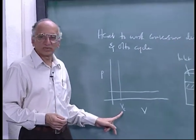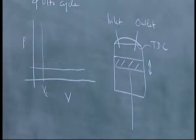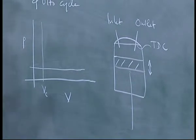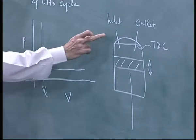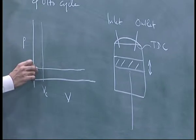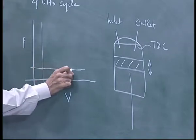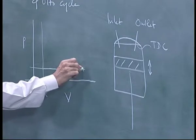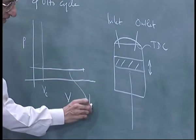The clearance volume is a design specification — you can make it as small as you are capable of, though it cannot be made zero. From here you open the inlet valve, keep the outlet valve closed, and the air is taken in as the cylinder moves outward so the volume increases. This is the inlet stroke.